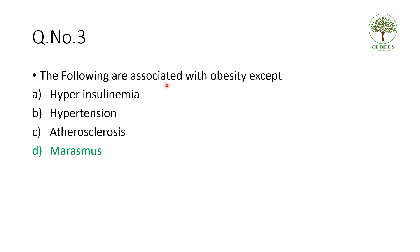Third question: which of the following is associated with obesity except? This is an exclusion option question. Marasmus is a protein-calorie malnutrition characterized by weight loss, so it is the exception. Hypertension and atherosclerosis are clearly related to obesity. Hyperinsulinemia may be confusing — insulin is an anabolic hormone that prevents lipolysis and protein catabolism, so hyperinsulinemia can be associated with obesity.